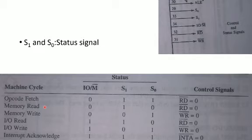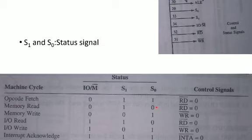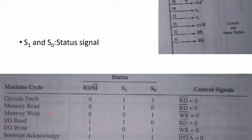For memory read, the memory reader is selected as a memory operation. The S0 content is 0 and the S1 value is 1. For memory write, S1 value is 0. The memory reader is selected based on these status values. If it is not a memory operation, these two status signals will differ.